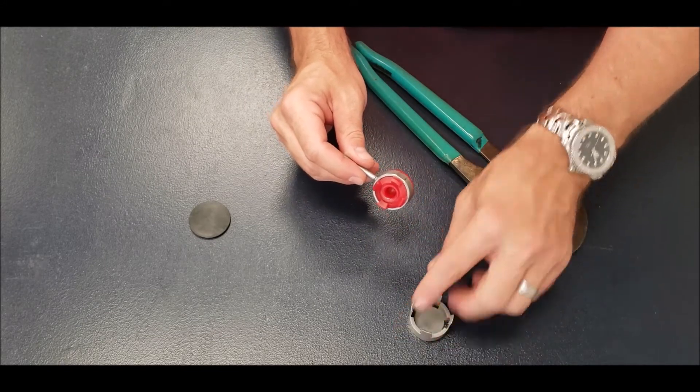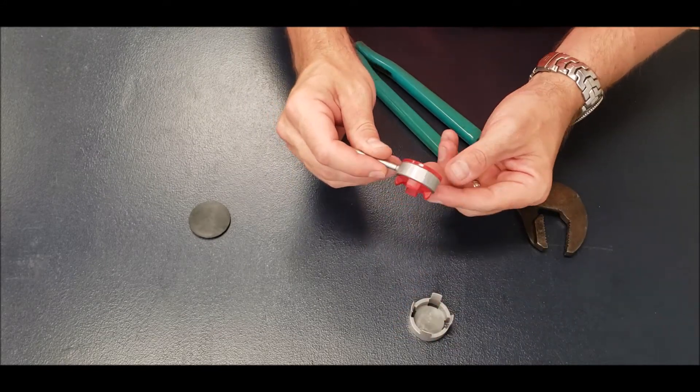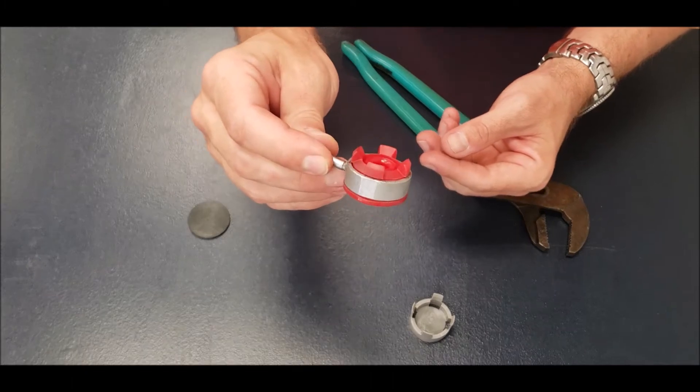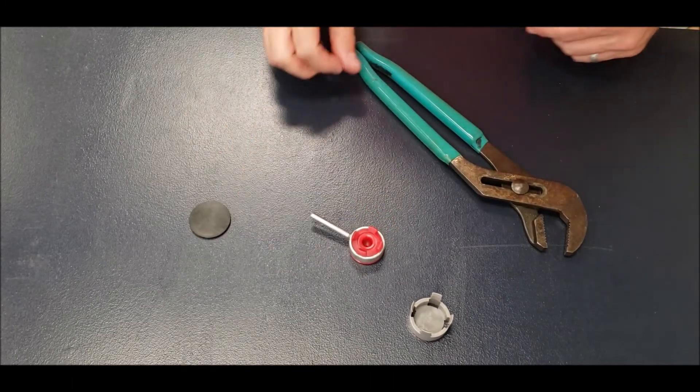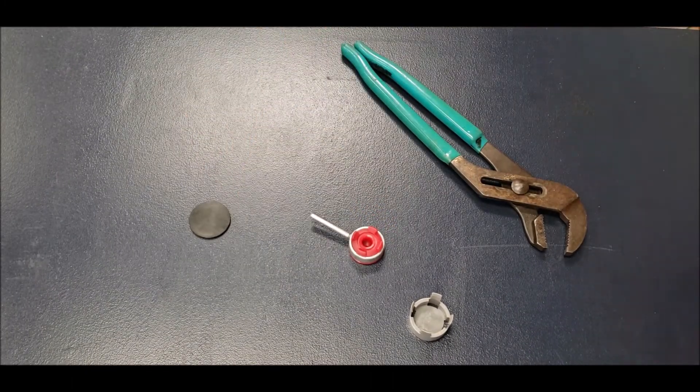Once you press the bushing into place, clip it onto the transmission lever, and shift it around to be sure everything's in place. That's it, you're done. Thanks for watching.